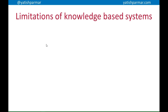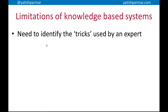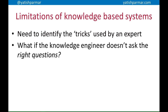Thinking about how a knowledge-based system is created reveals its limitations. First, the knowledge engineer needs to identify the tricks experts use to quickly arrive at the right solution. If those tricks aren't identified, the system may take a long time to reach a conclusion or take a roundabout route. This stems from the knowledge engineer not asking the correct questions — remember, the knowledge engineer is not an expert in that domain, so we're relying on them having the right skill set to interrogate the experts.